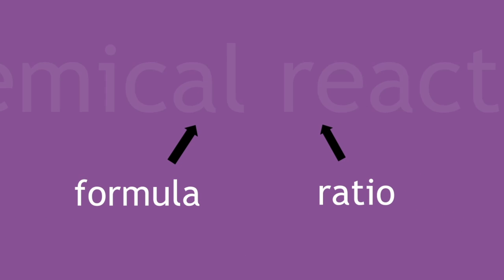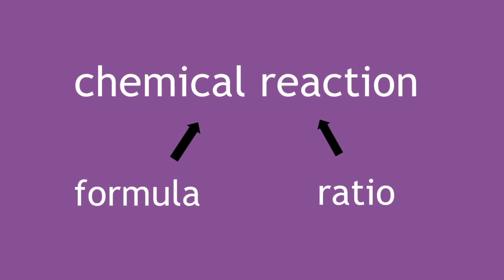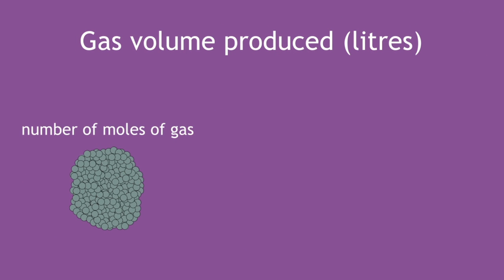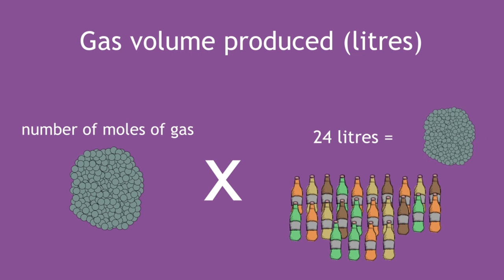This is where you can use a formula and ratio given from a chemical reaction. The formula is gas volume produced in litres equals the number of moles of gas multiplied by 24 litres per mole.